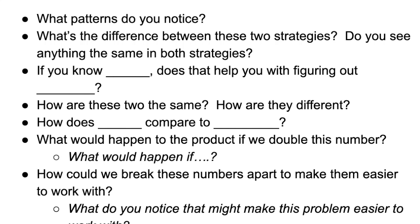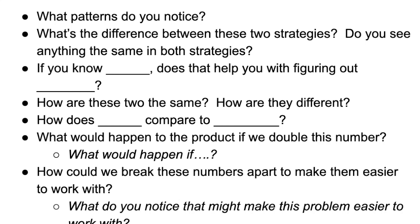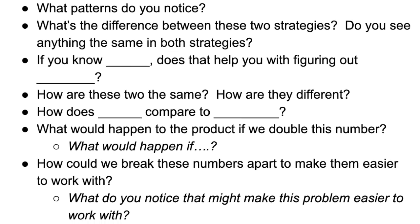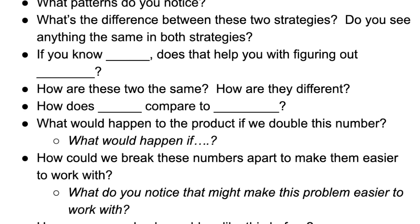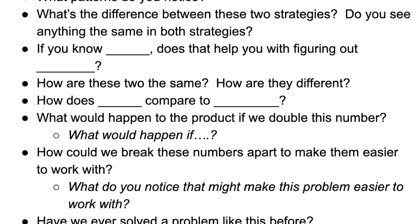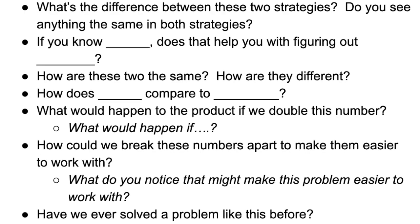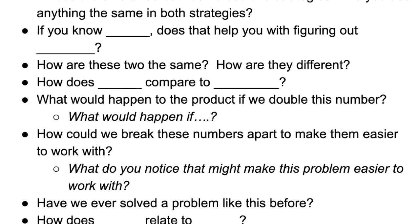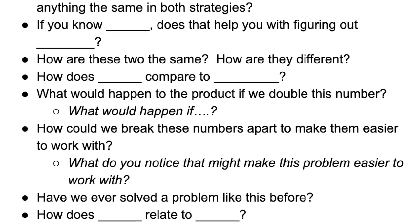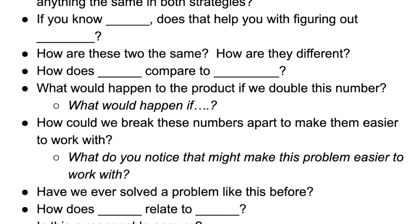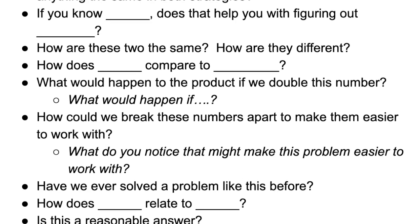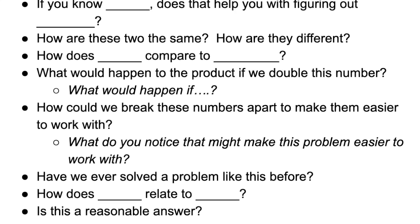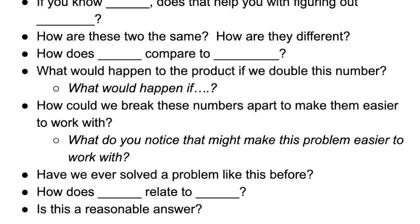What patterns do you notice? What's the difference between these two strategies? Do you see anything the same in both strategies? If you know blank, does that help you with figuring out blank? How are these two the same? How are they different? How does blank compare to blank? What would happen to the product if we double this number? And more generally: what would happen if... — whatever makes sense in the moment. How could we break these numbers apart to make them easier to work with? Or more generally: what do you notice that might make this problem easier to work with? Have we ever solved a problem like this before? How does blank relate to blank? And finally: is this a reasonable answer?